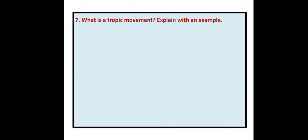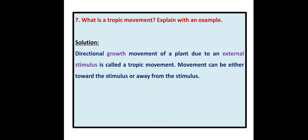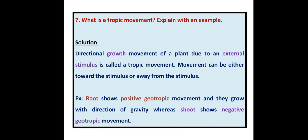What is a tropic movement? Explain with an example. The directional growth movement of a plant due to an external stimulus is called a tropic movement. Movement can be either toward the stimulus or away from it. For example, roots show positive geotropic movement and grow in the direction of gravity. Shoots show negative geotropic movement — they grow away from gravity — but positive phototropic movement, meaning growth towards light.